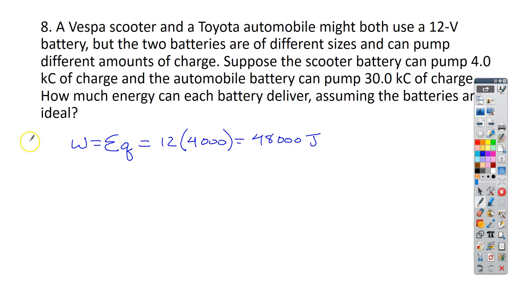In the automobile, we're going to use the same equation. We've got 12 volts, but this time we have 30,000 coulombs of charge. And so we get 360,000 joules. So obviously there's more energy or more work that can be done by that battery. So a lot more energy from the car battery itself.